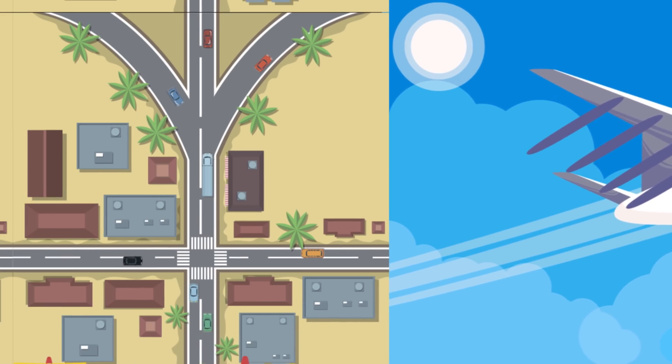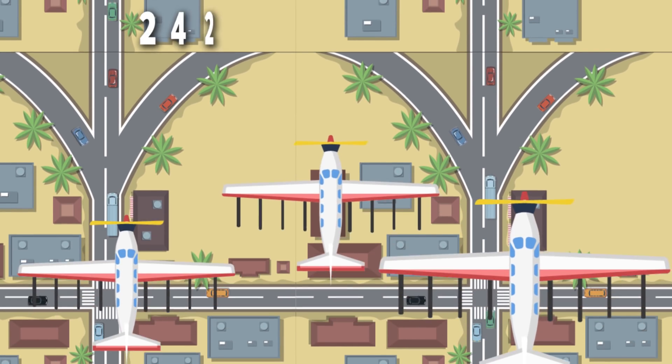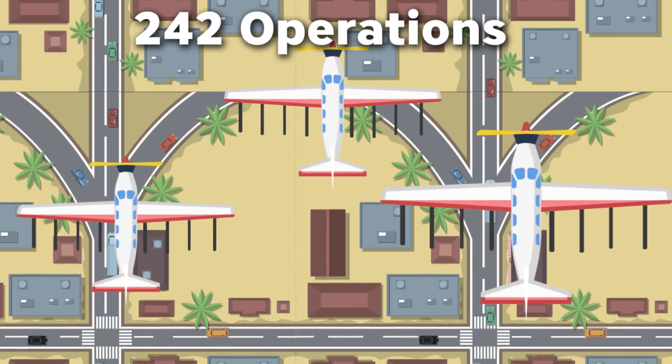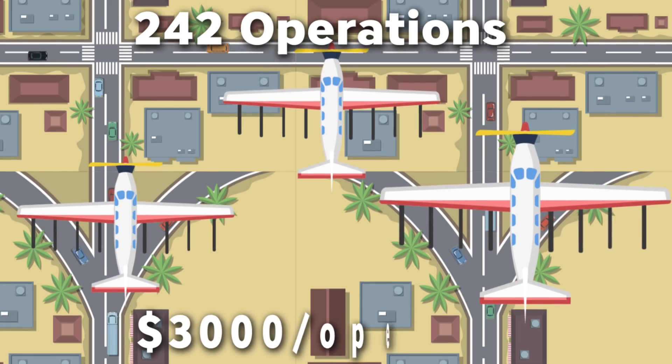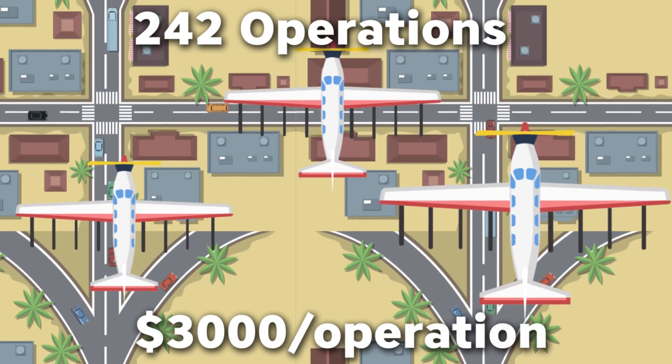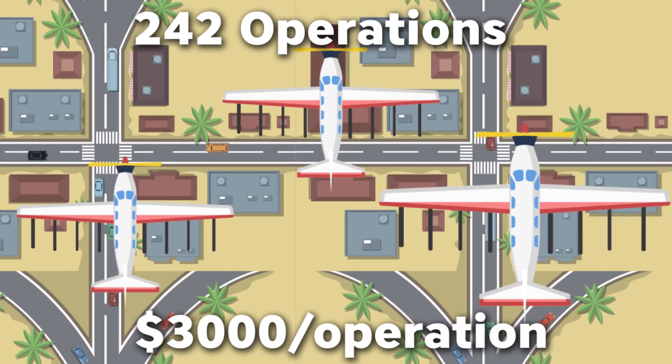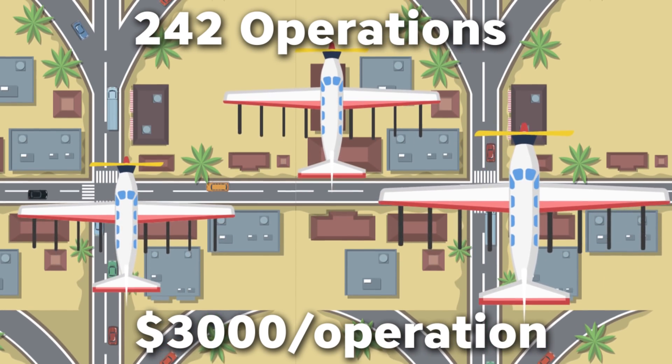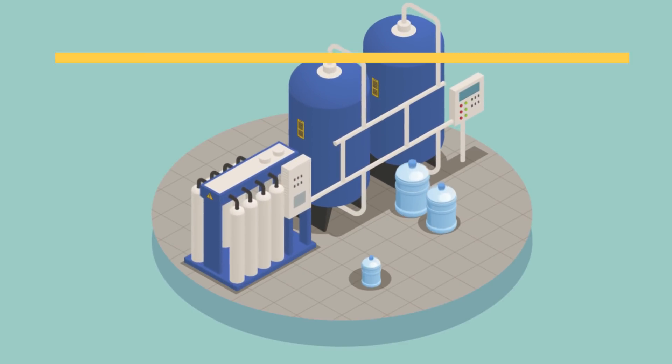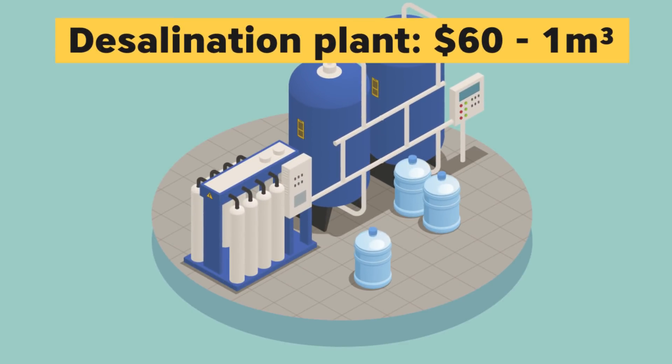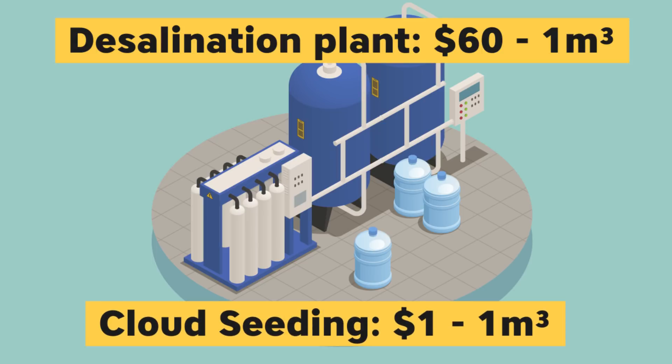In 2019, the UAE conducted 242 missions of cloud seeding with each aircraft taking about three hours to target five to six clouds at a cost of $3,000 per operation. It's much cheaper than desalination plants. Desalinating one cubic meter of water from the sea costs around $60, whereas the same amount of water extracted through cloud seeding costs just $1.